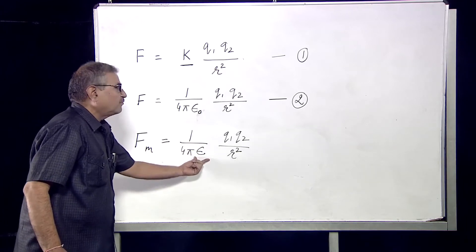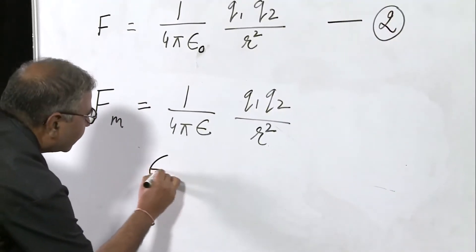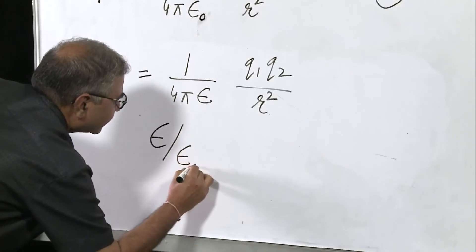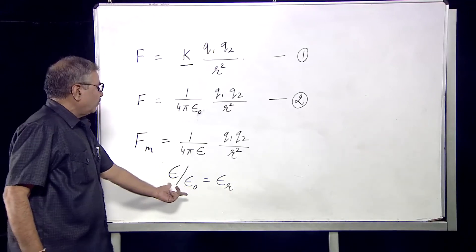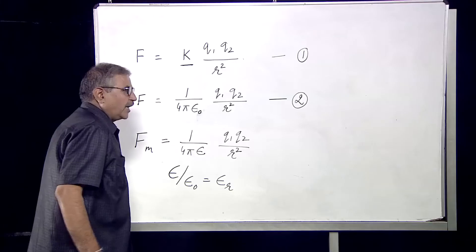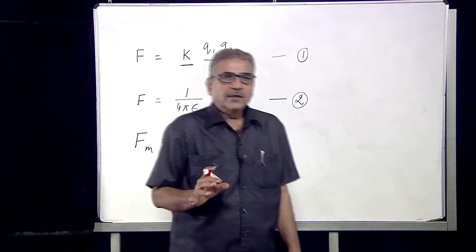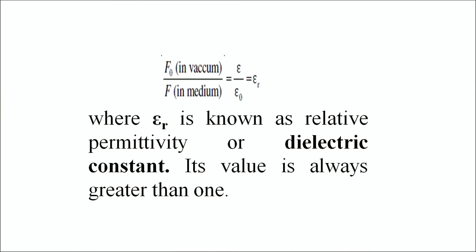Here, ε is the permittivity of that medium, and the ratio of ε upon ε₀ is known as εr, the relative permittivity of the medium. The relative permittivity is also known as the dielectric constant of the medium. Mathematically, we can write that F in vacuum divided by F in medium, that is F upon F₀, is equal to εr, the relative permittivity.